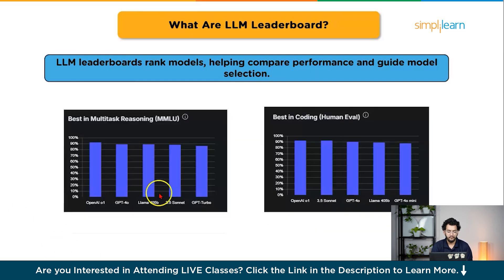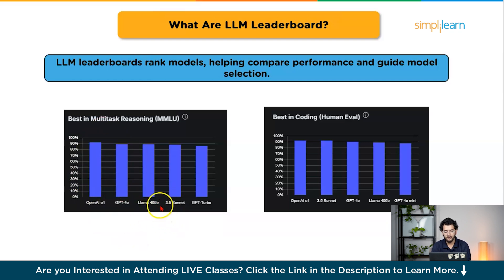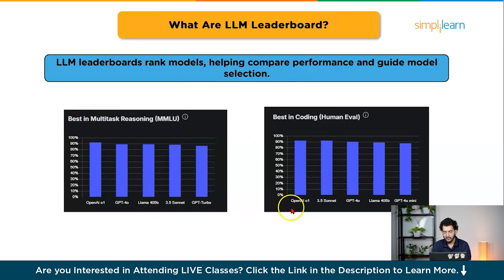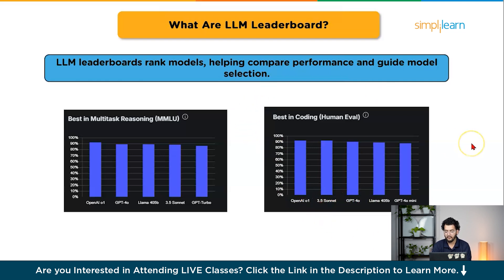Looking at the leaderboard, OpenAI is leading, with GPT-4o in second and LLaMA 405B in third, followed by Claude 3.5 Sonnet. This ranking reflects best performance in multi-task reasoning. In the best-in-coding category, OpenAI leads — likely with the o1 model — followed by Claude 3.5 Sonnet in second and GPT-4o in third.